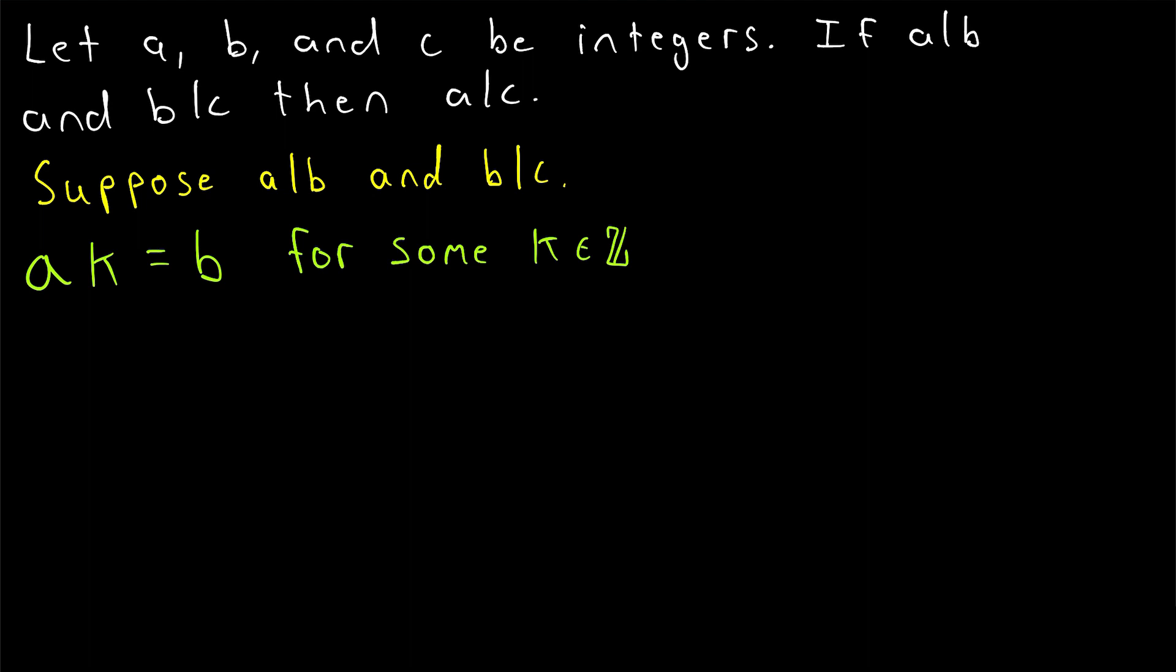Since B divides C, there must be some integer we'll call J that we can multiply by B in order to get the number C. So C is equal to B times J for some integer J. A good thing to be aware of when you're starting to learn proofs is what would the final line of your proof look like? What sort of equality would you need to get to prove your desired result?